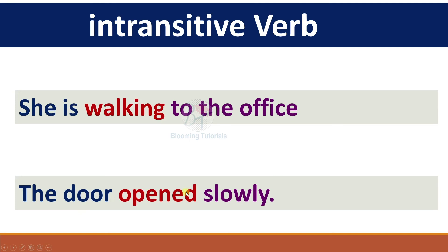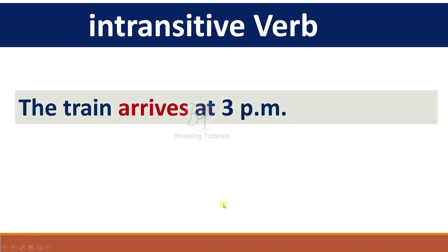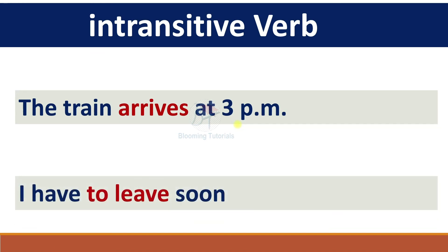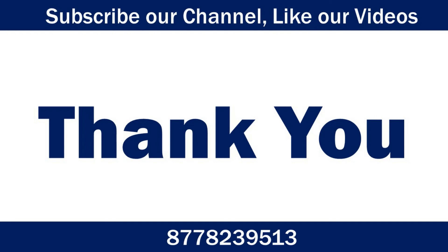That is called an intransitive verb. 'The train arrives at 3 p.m.' Here, 'arrives' is an intransitive verb because it is followed by the prepositional phrase 'at 3 p.m.' 'I have to leave soon.' Here, 'leave' is an intransitive verb because it is followed by an adverbial phrase.